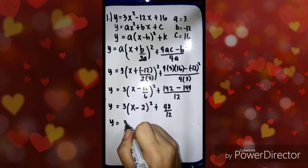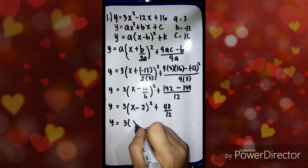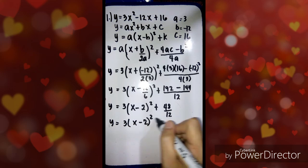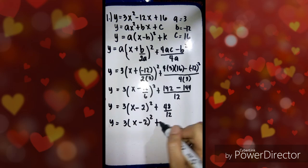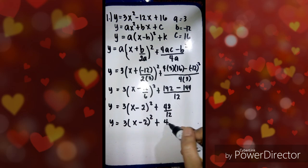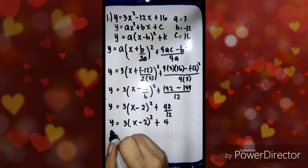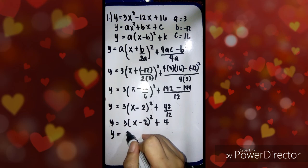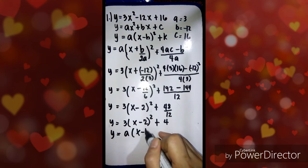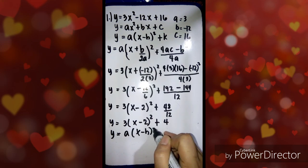So we have 3 times x minus 2 squared, plus 48 divided by 12 which is 4. Now it is in the form of y equals a times x minus h squared plus k.